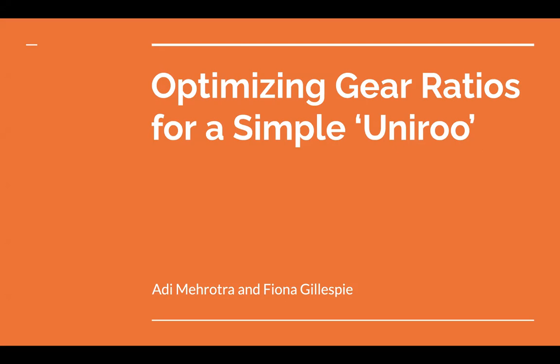This project focuses on using trajectory optimization to optimize gear ratios for a hopping robot based on a simplified model of the Mini-Cheetah platform.